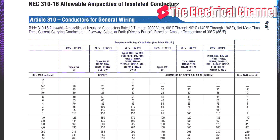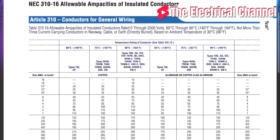On the left-hand side, you can see the AWG, and that means American Wire Gauge. In circular mils — one mil means one thousandth of an inch. That's basically the size of the diameter.